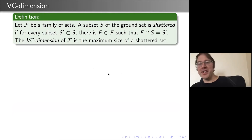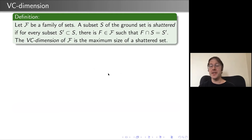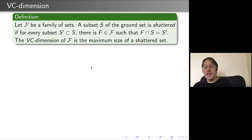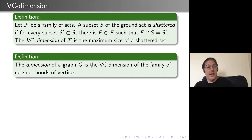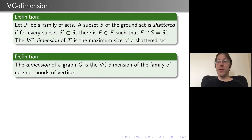Now we get to introducing VC dimension. Consider a family F of sets. A subset S of the ground set is shattered if for every subset S' of S, there is some F in your family whose intersection with S is precisely S'. The VC dimension of F is the maximum size of a shattered set. For graphs, a natural notion of dimension is the VC dimension of the family of neighborhoods of vertices: for each vertex, there's a set of vertices it's adjacent to, giving N neighborhoods whose VC dimension we measure.